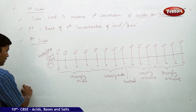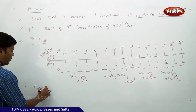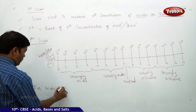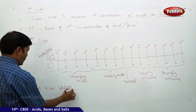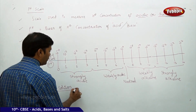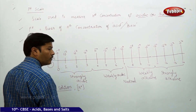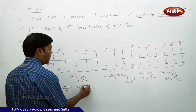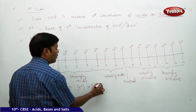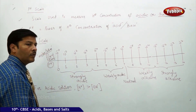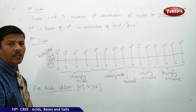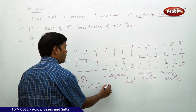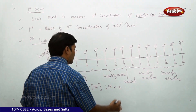For an acidic solution, the H+ ion concentration is always greater than the OH− ion concentration, and therefore the pH is always less than 7.